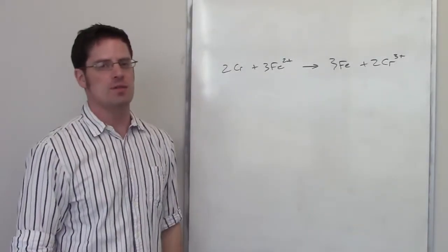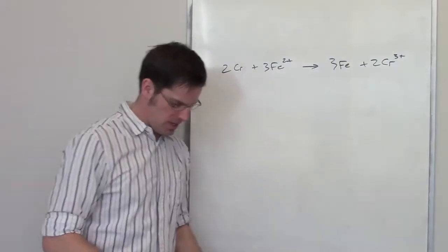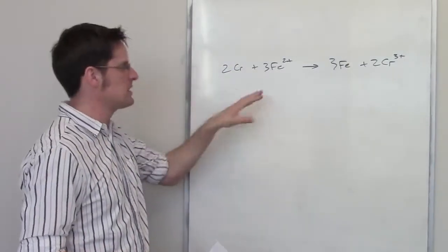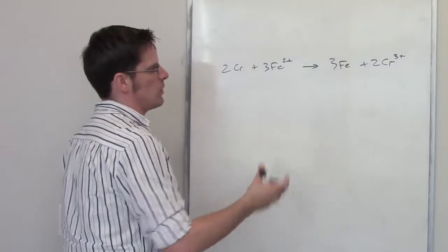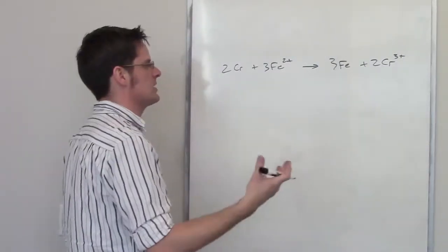This problem is actually not too tough. It's asking us what the standard cell potential is for a voltaic cell based on this reaction. In order to do this, what we need to do is separate it out into its half reactions by figuring out what's oxidized and what's reduced.